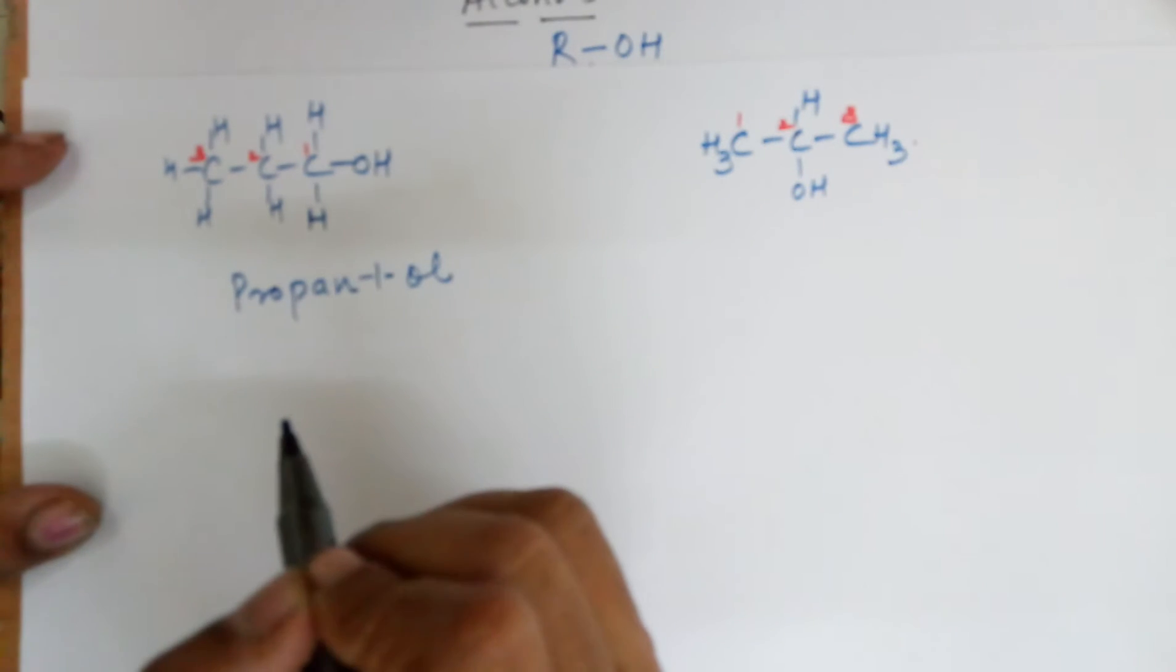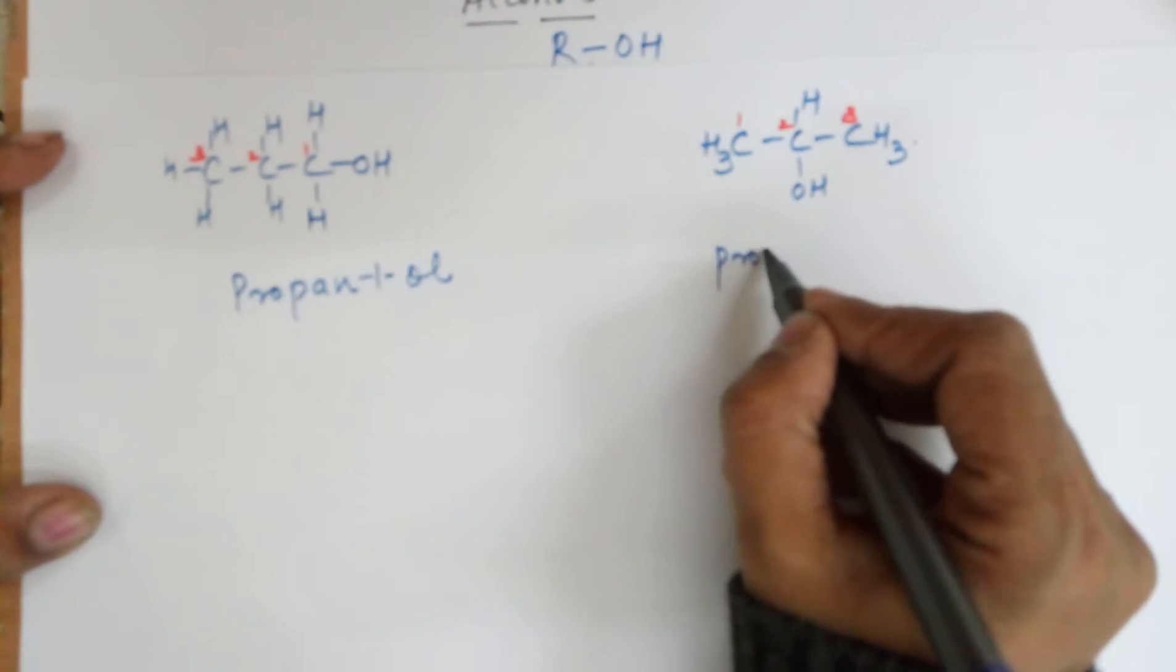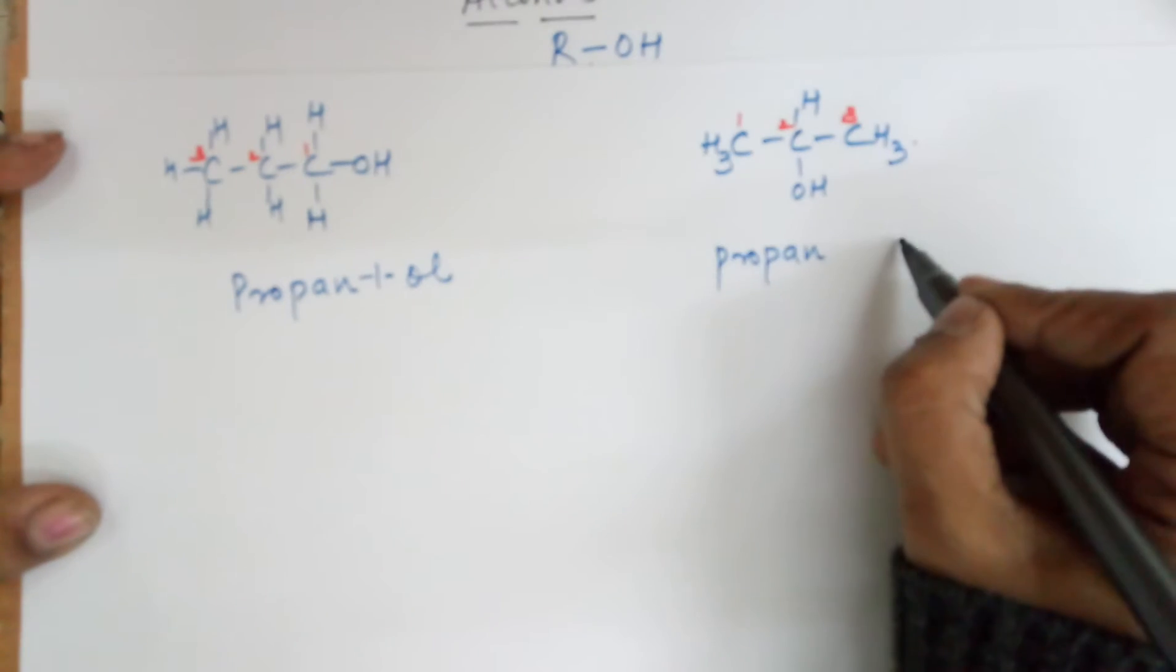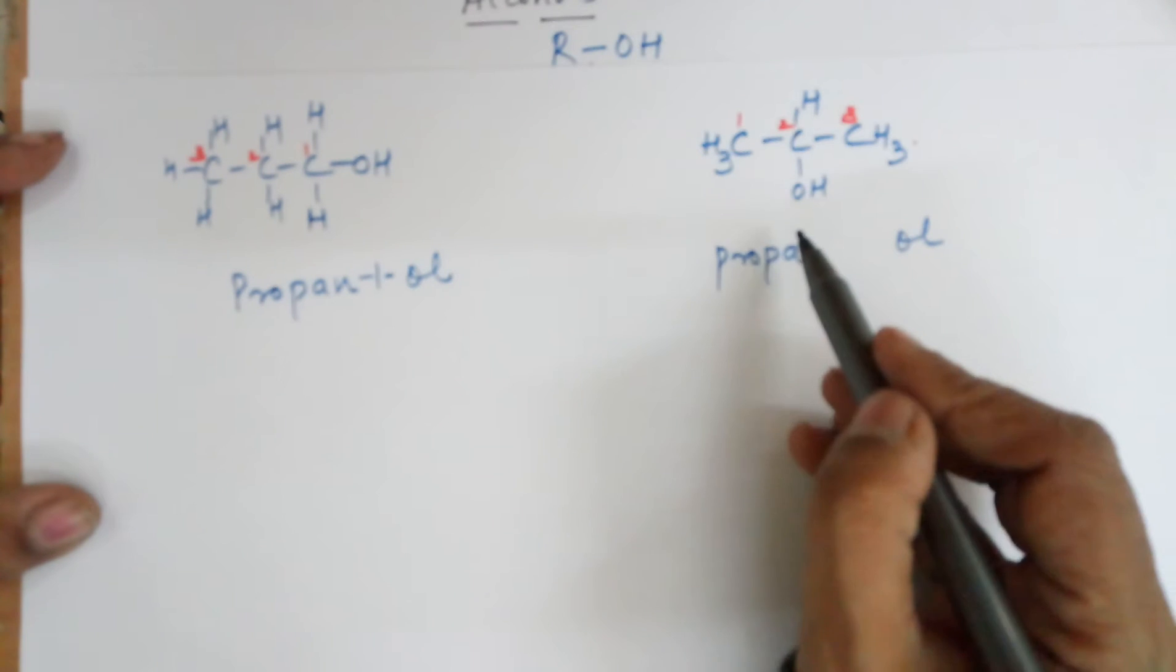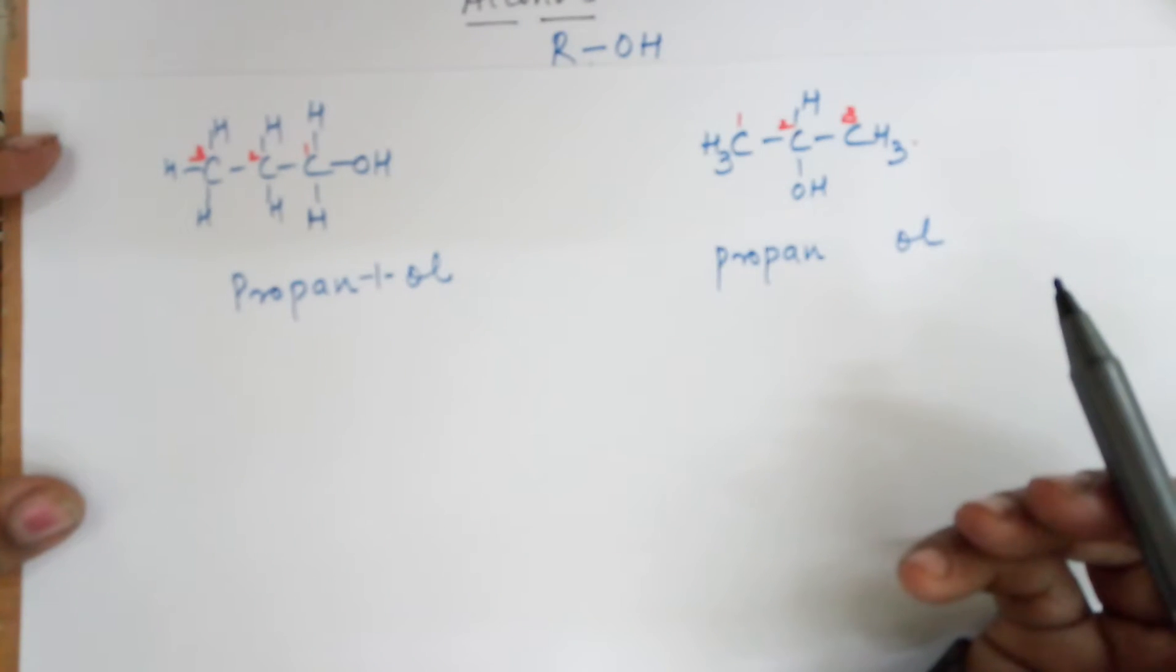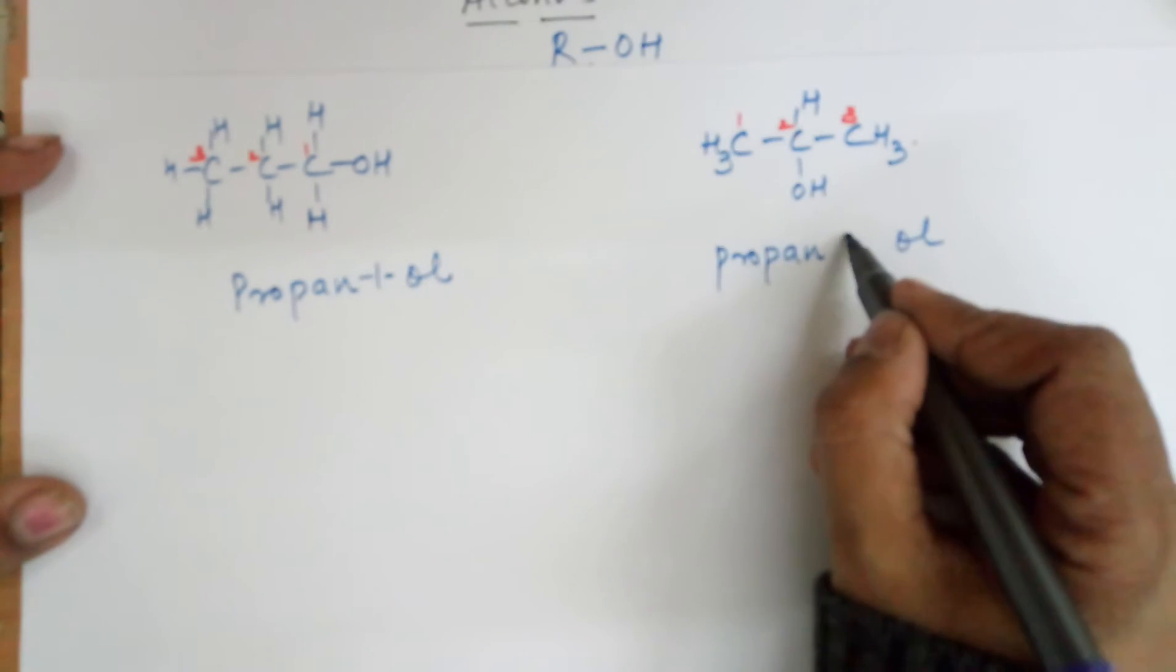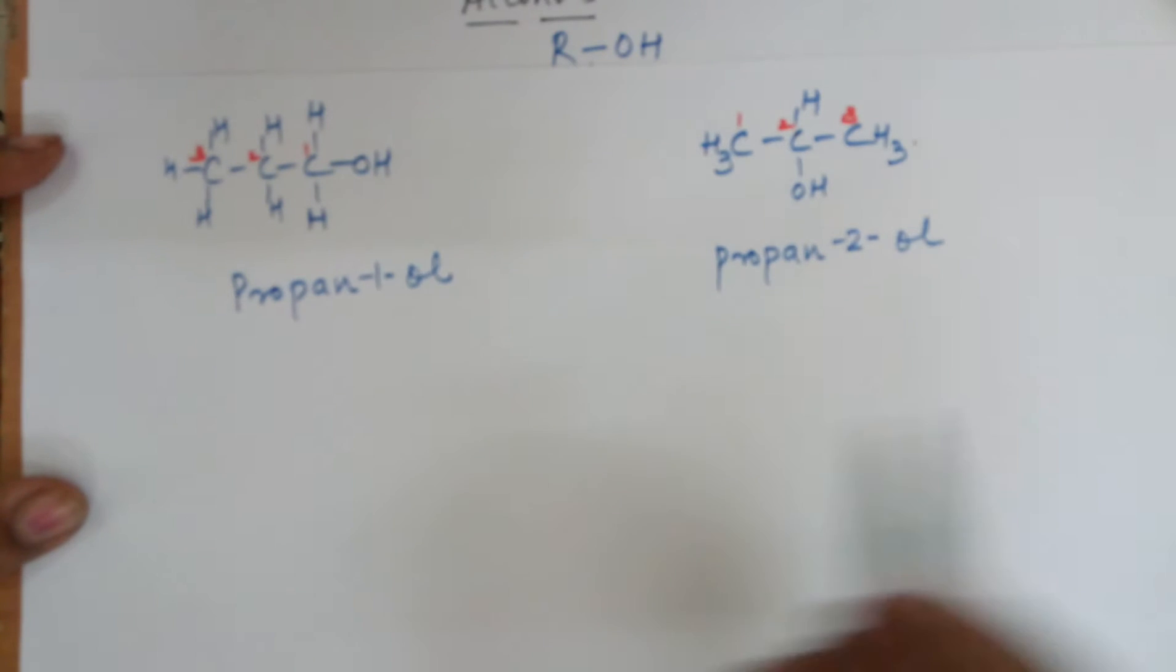Hence the nomenclature: this has got three carbons, so propane, remove the E, add 'ol', and you can mention a one in between to specify the position of the OH group. While in this case also the name is propane and 'anol', but in this case, since if I don't mention any position then it's understandable it's the first position. If I mention it, then in this case the position is two.